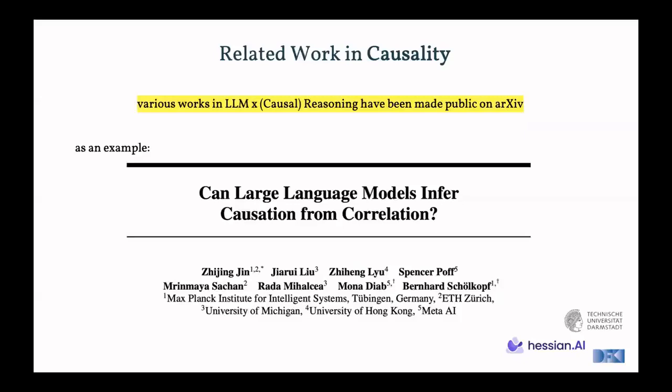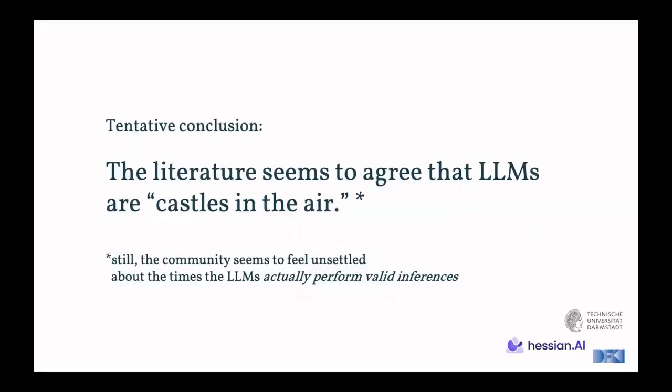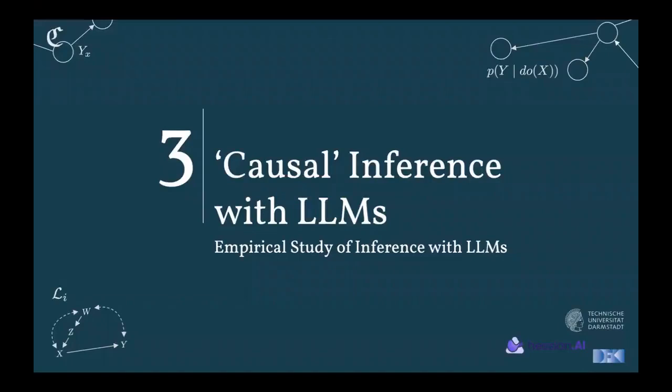Various works now in LLM reasoning, including causal reasoning, have been made public on archives. For example, this work by a group of researchers from Tübingen, Zurich, Michigan, and Hong Kong, who are looking at large language models in the causation and correlation setup that we propose in this work. And as a key takeaway, they evaluate an extensive list of LLMs on this new task that they present and show that they perform poorly. Therefore, as a tentative conclusion, we can say that the literature seems to agree that LLMs are just castles in the air. Nonetheless, there are these situations where they actually perform valid inferences. And so the case does not seem to be closed. And this might also give a reason to why there's been a debate in the first place, why there's contrary opinions on this.